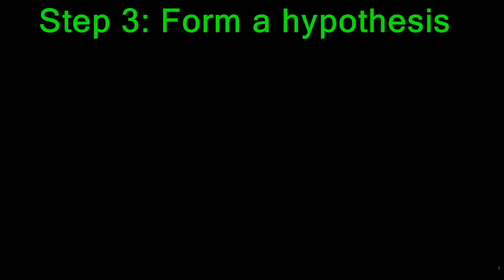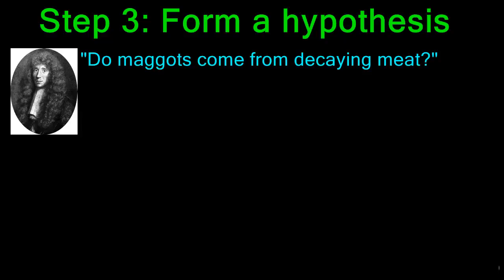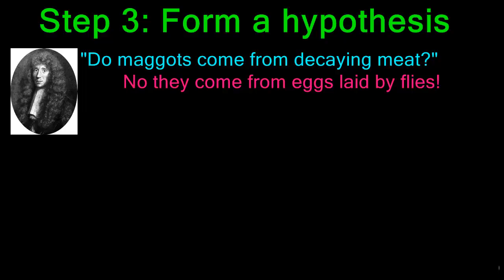Step 3 of the scientific method is forming a hypothesis. A hypothesis is a possible solution to your question. In Redi's case, his question was, do maggots come from decaying meat? Well, he had noticed, based on his research, that living things come from other living things of the same kind. So he would hypothesize that maggots come from eggs laid by flies, not from decaying meat.